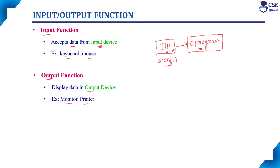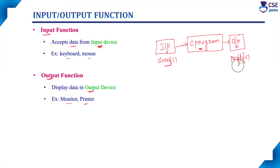The C program will accept the appropriate input and process the data with the help of the C code, and it displays the desired output with the help of output devices. To display output on the output screen, we require an output function. With the help of scanf we can provide input to the C code, and the C program will process that input and produce the desired output using the output function.